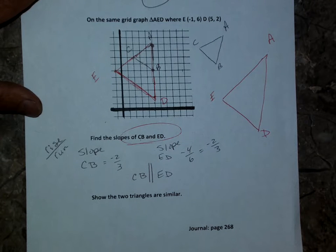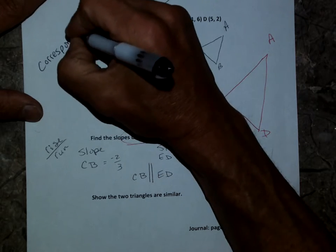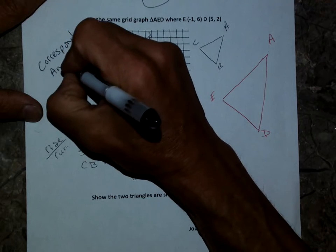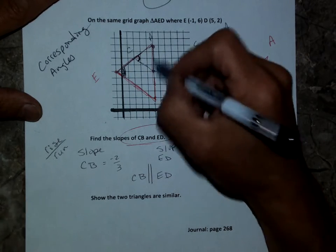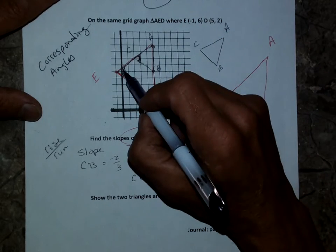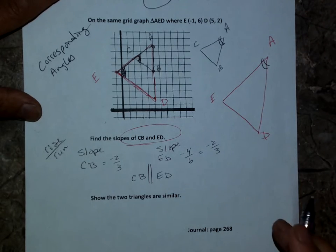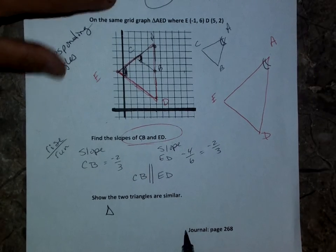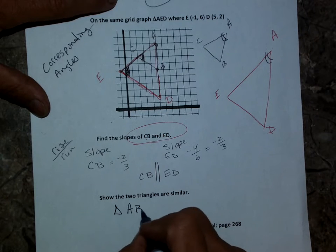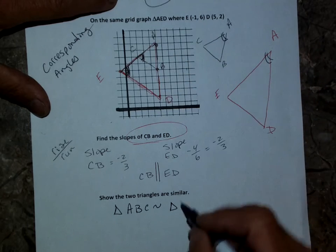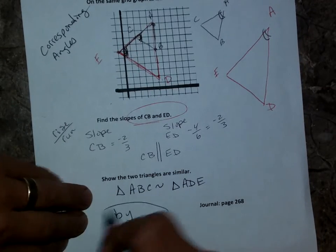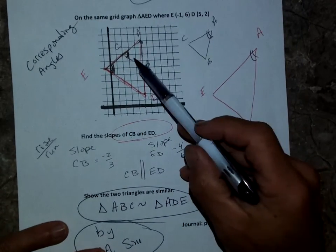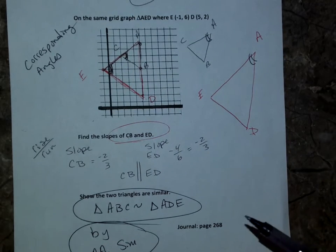Knowing CB is parallel to ED gives us corresponding angles — sometimes called the F-pattern. This angle equals this angle by corresponding angles, and angle A equals angle A. So triangle ABC is similar to triangle ADE by Angle-Angle similarity. I had to first prove they were parallel, then use corresponding angles to establish the two congruent angle pairs.